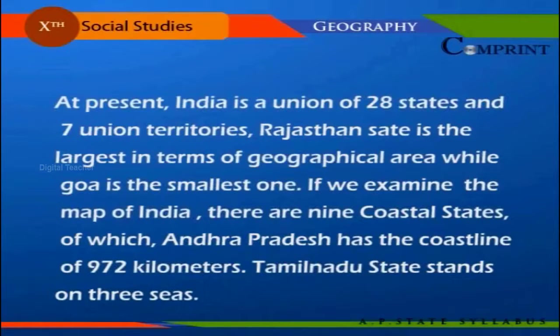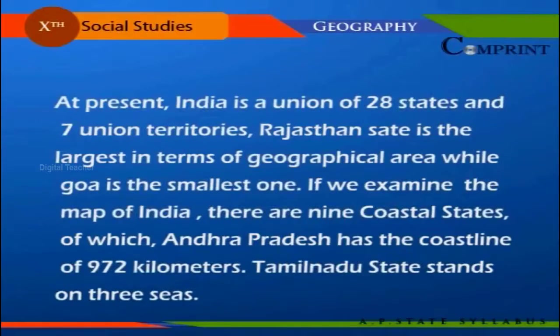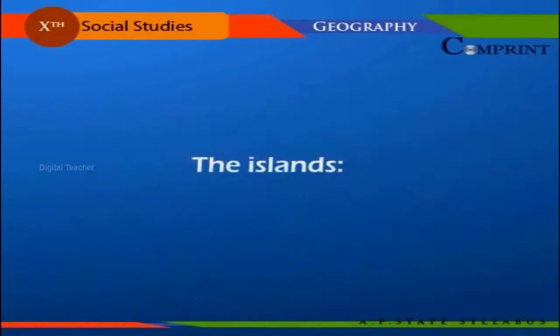If we examine the map of India, there are nine coastal states. Andhra Pradesh has a coastline of 972 kilometers, and Tamil Nadu stands on three seas.